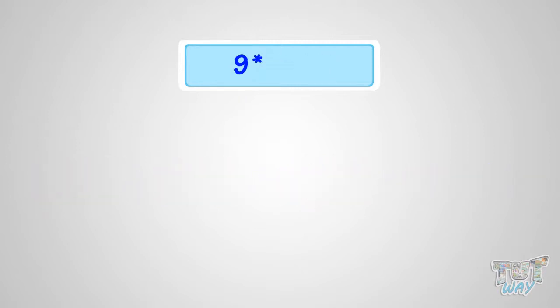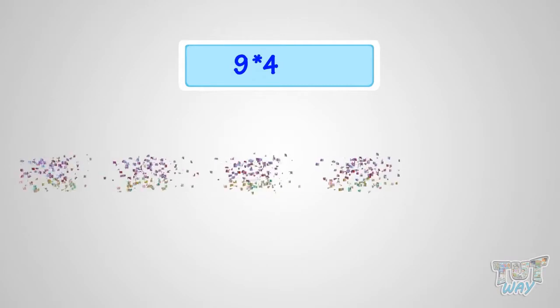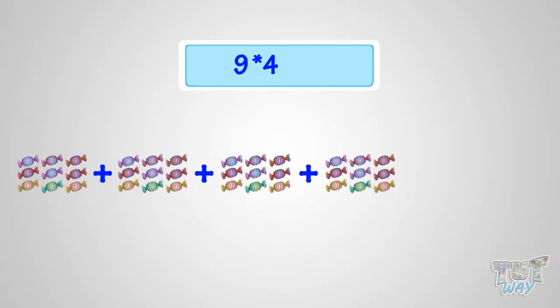What is 9 multiplied with 4? It is same as four sets of 9 candies. So, it is 36 candies.